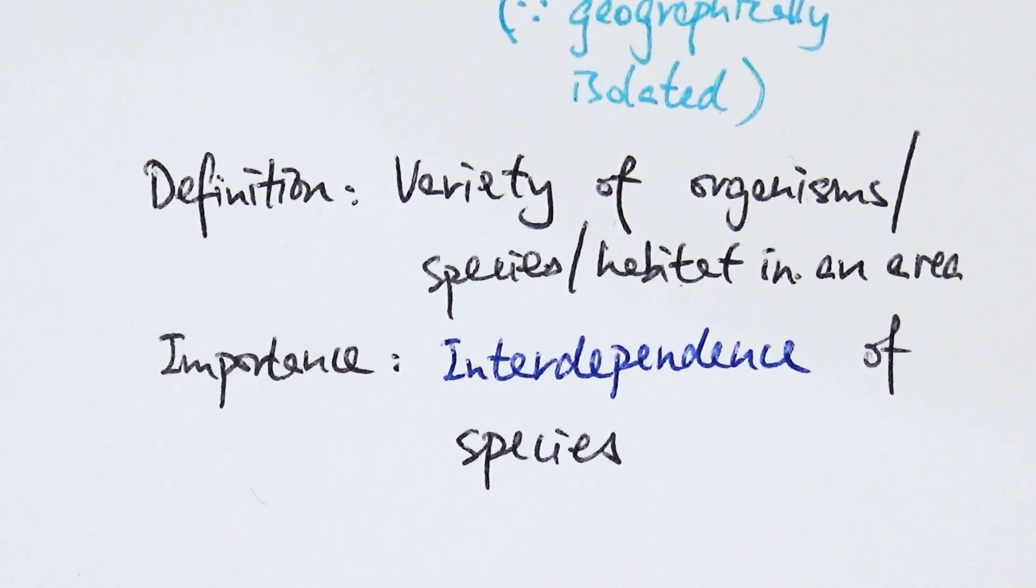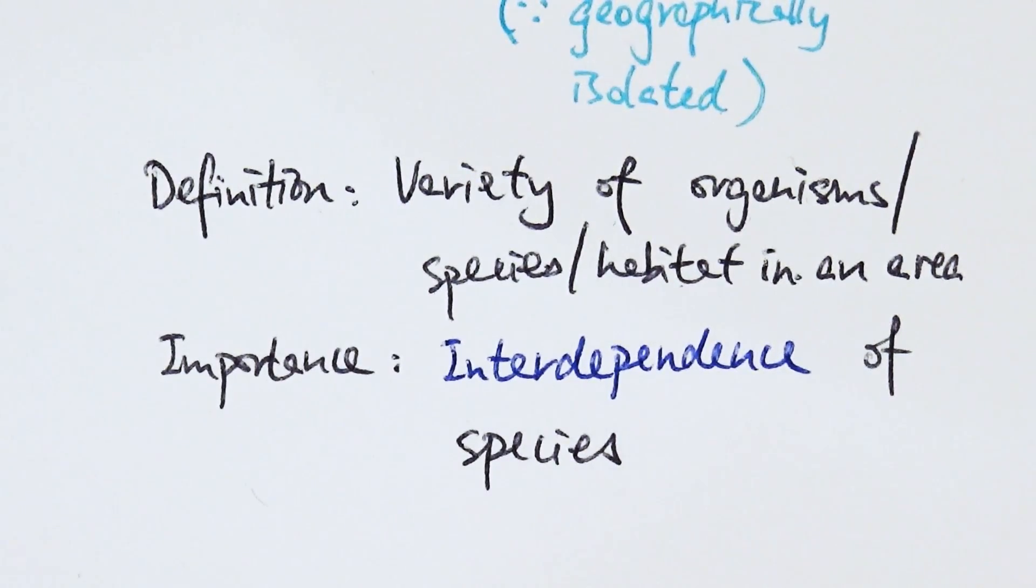First of all, let's think about what biodiversity actually is. Biodiversity is a very general term referring to the variety of organisms, species, and habitat in a particular area.